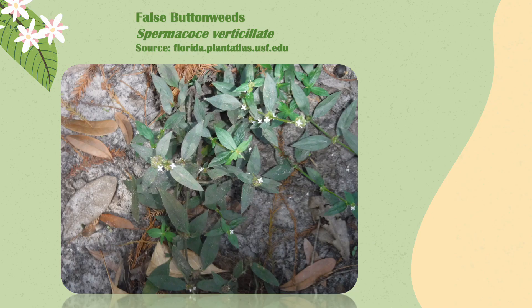These are false buttonweeds, Spermacoce verticillata, and these serve as an important nectar source for a very important biological control for the mole cricket.